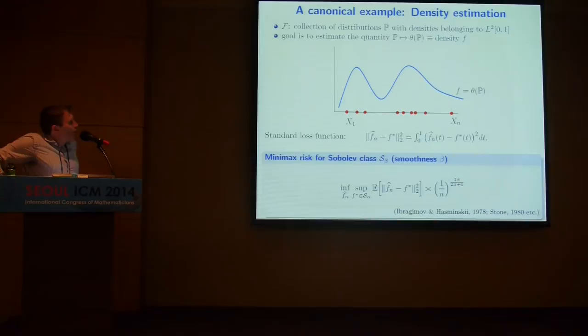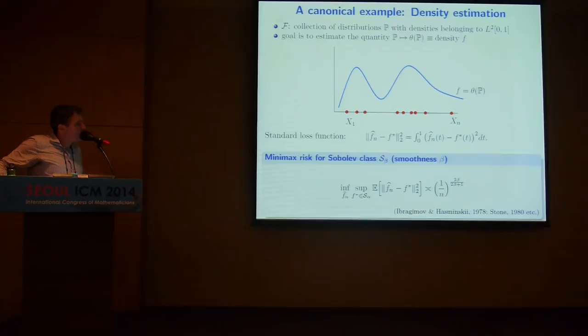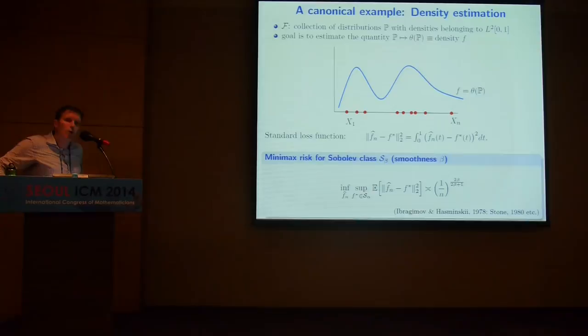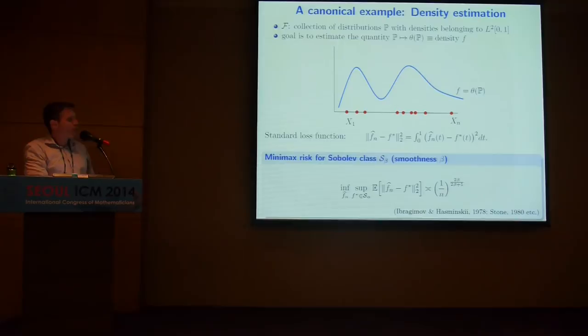If your density is smoother, intuitively it should be easier to estimate. Looking at Sobolev classes — classes of densities with a certain number of derivatives, some smoothness beta — the minimax risk drops like 1 over n with an exponent of 2 beta over 2 beta plus 1. For Lipschitz densities, beta equals 1, giving an exponent of two-thirds. If densities have infinitely many derivatives, you get the parametric rate of 1. I'll revisit this when we have further constraints on our estimators.